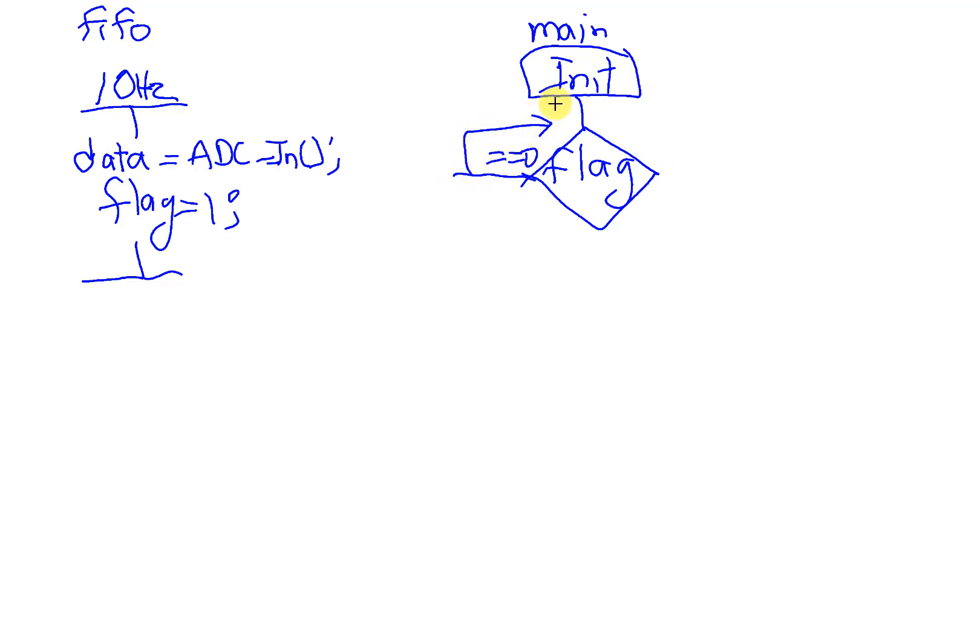Again, this is the foreground loop here, the main program. If the flag is set, what my simple program did with the mailbox was to clear the flag and convert the data. I would take the data and I would convert it.